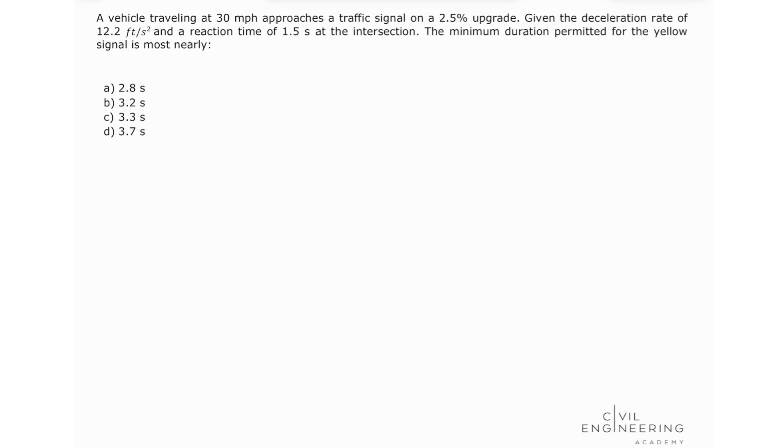A vehicle traveling at 30 miles per hour approaches a traffic signal on a 2.5% upgrade. Given the deceleration rate of 12.2 feet per second squared and a reaction time of 1.5 seconds at the intersection, the minimum duration permitted for the yellow signal is most nearly.